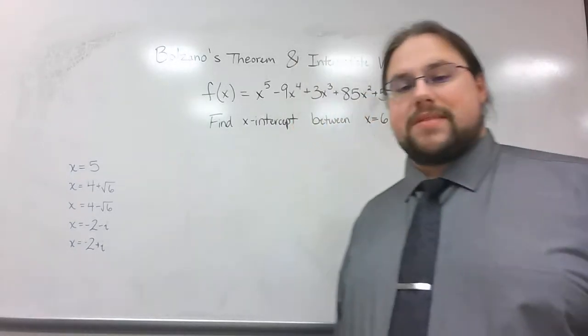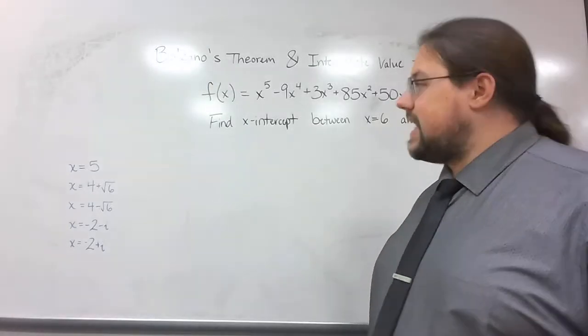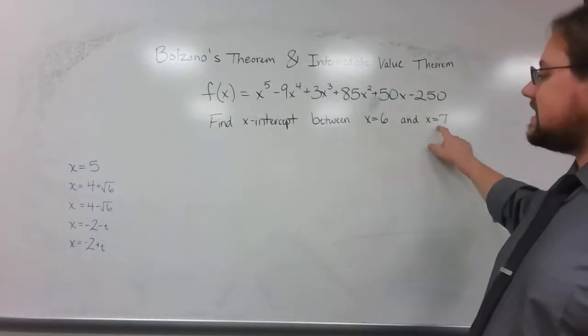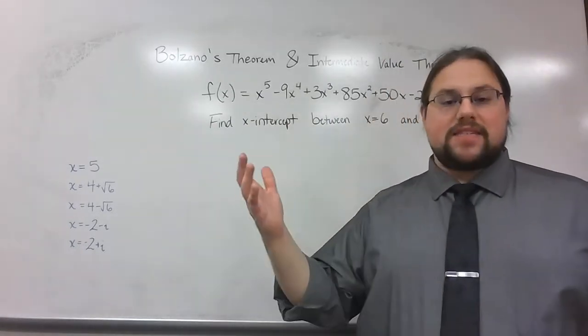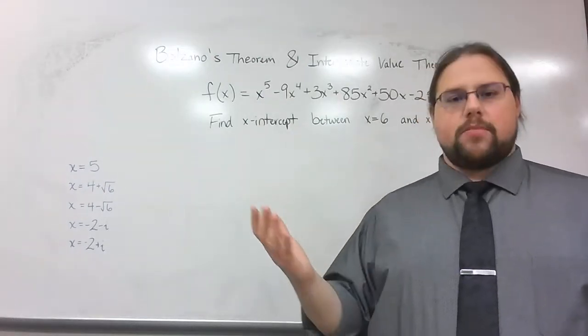So Bolzano's theorem is more specific because it's only talking about x-intercepts. So that means essentially, in this case, if I find an x-intercept between 6 and 7, that means if I were to plug in 6 and 7, I would get a positive number and a negative number because 0 has to be somewhere between a positive number and a negative number.